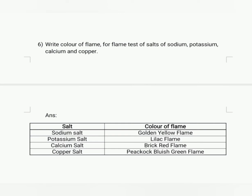Color of flame: sodium gives a golden yellow flame, potassium salt gives a lilac flame, calcium gives a brick red flame, and copper salt gives a peacock bluish-green flame.